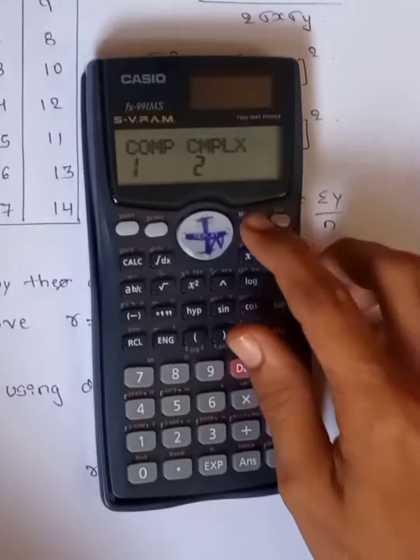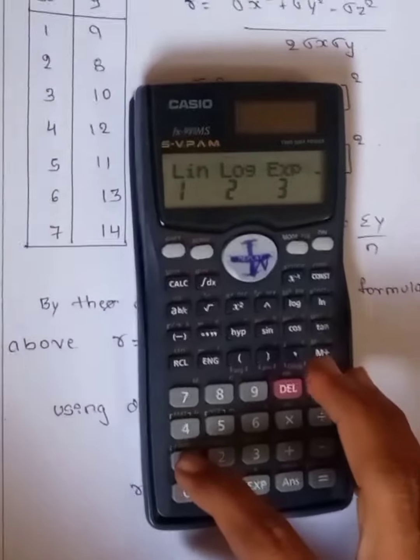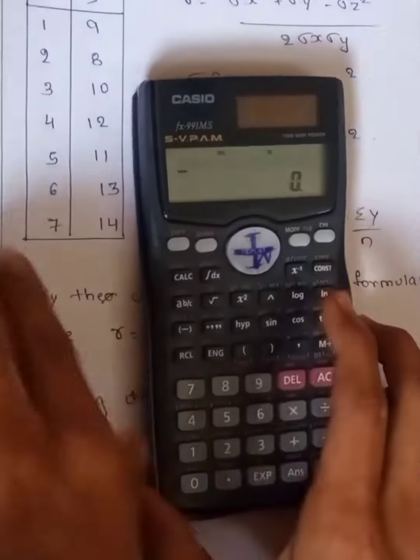Press mode two times and select regional. Then select the linear option, that is one, and put the corresponding assigned variables.